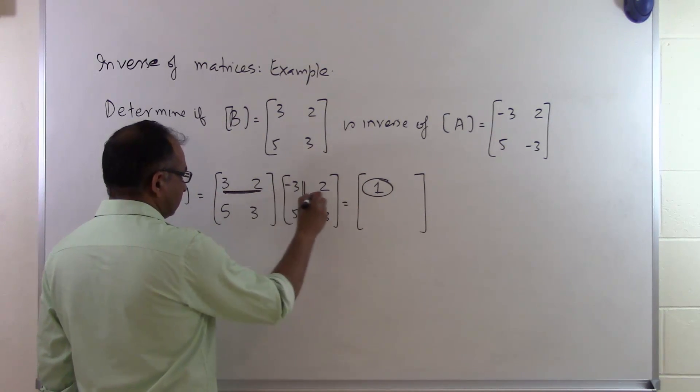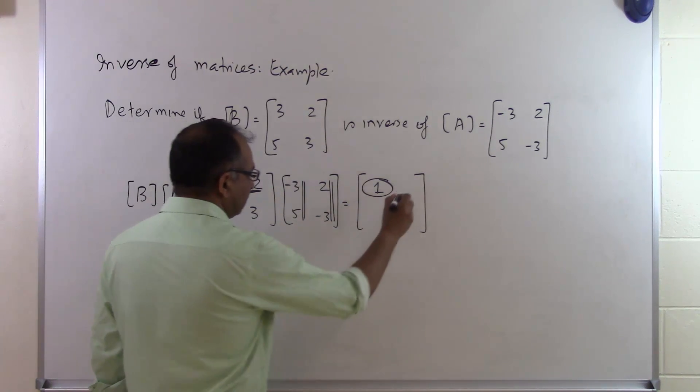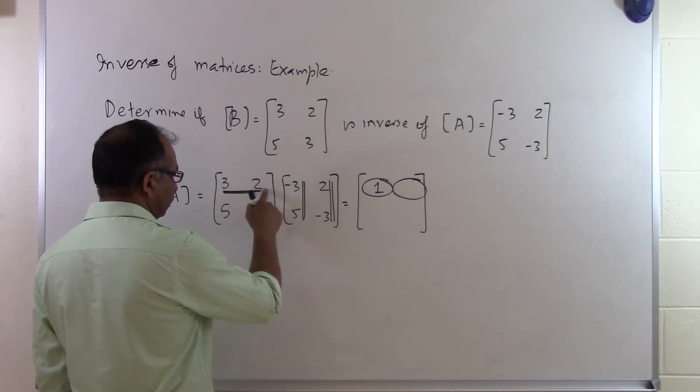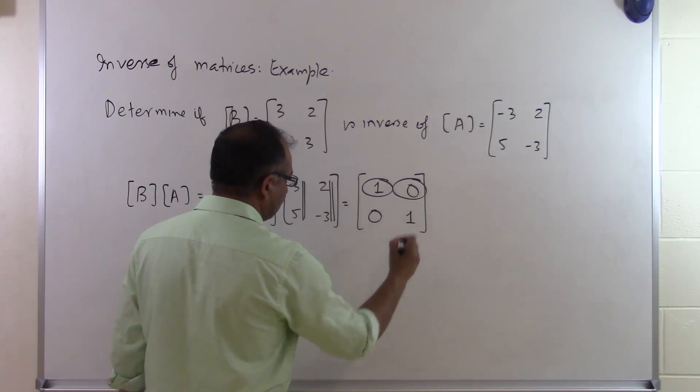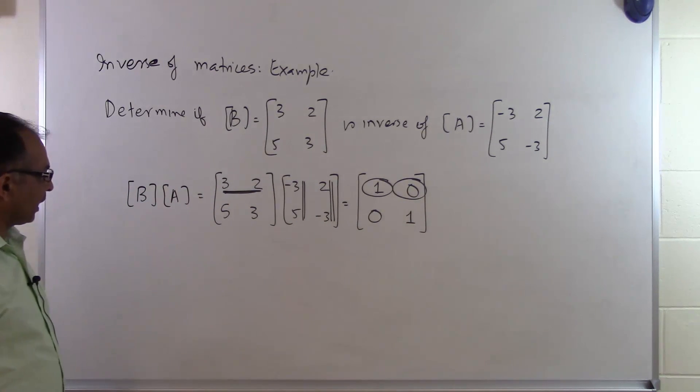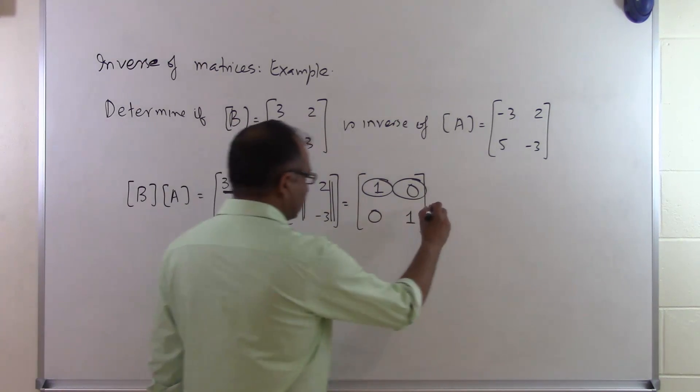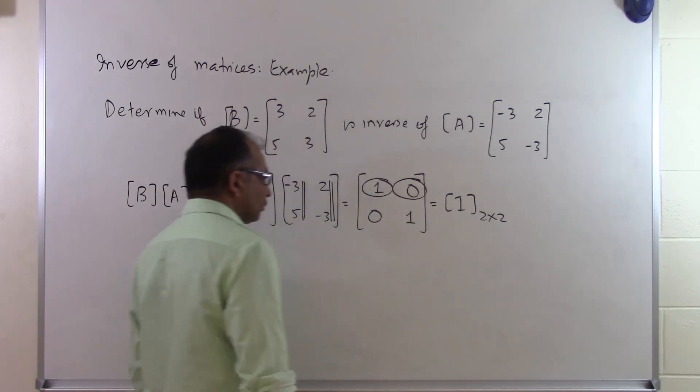First row multiplied by the second column will give me the first row second column. 3 times 2 is 6, 2 times minus 3 is minus 6, so that gives me 0. Similarly I can show this to be 0 and this to be 1. That shows that B is in fact inverse of A because that itself is the identity matrix with 2 rows and 2 columns.